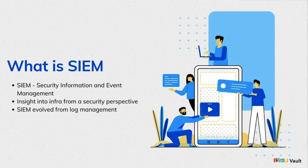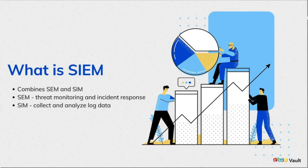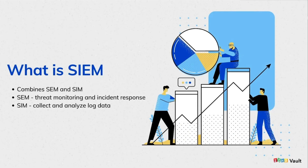SIEM has been in existence for more than a decade, but it actually evolved from log management. SIEM evolved from two things: SEM — Security Event Management — which lets you analyze log events and data in real time to provide threat monitoring, event correlation, and incident response; paired with SIM — Security Information Management — that collects and analyzes log data and creates reports based on that.